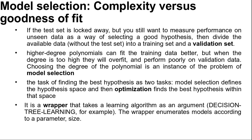Finding the best hypothesis has two tasks. First is model selection: define the hypothesis space. Second is optimization: find the best hypothesis within that space. We need to select among models parameterized by size — for polynomials, size = 1 is a linear function, size = 2 is quadratic, and so on. For decision trees, size could be the number of nodes. In all cases we want to find the value of the size parameter that best balances underfitting and overfitting to give the best test set accuracy.